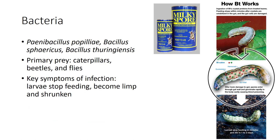Bacteria rarely cause disease in insects, although saprophytic bacteria, which mask the real cause of death, frequently invade dead insects. Relatively few bacteria are used for pest control, but several have proved to be useful entomopathogens against particular pests. Paenibacillus popilliae is an obligate pathogen of scarab beetles and causes milky spore disease, named for the white appearance of the body of infected larvae. Ingested spores germinate in the larval gut and lead to septicemia. Infected larvae and adults are slow to die, which means that P. popilliae is unsuitable as a microbial insecticide, but the disease can be transmitted to other beetles by spores that persist in the soil.